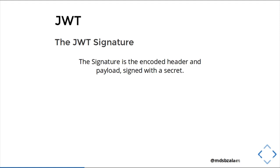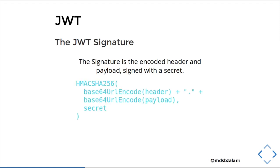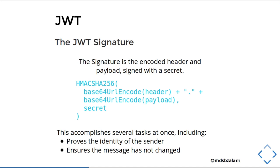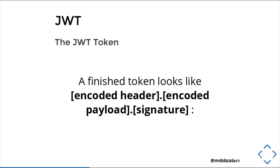The JWT signature is the encoded header and payload signed with a secret. The header is encoded using Base64 URL encoding, similarly the payload, and it is signed with a secret. This accomplishes several tasks at once, including proving the identity of the sender and ensuring that the message has not changed. The finished token looks like: encoded header dot encoded payload dot signature.